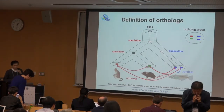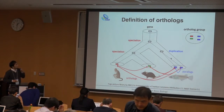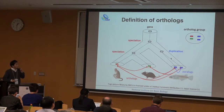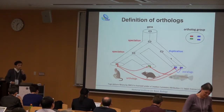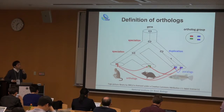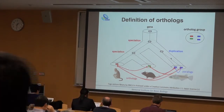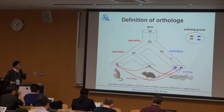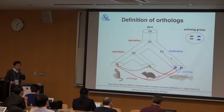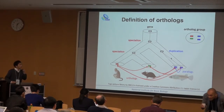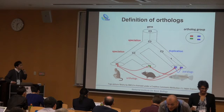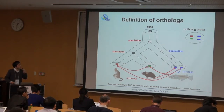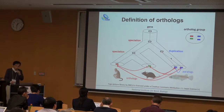First, I will mention the definition of orthologs. Originally, orthologs are defined as gene pairs diverged by speciation. So in this example of an evolutionary scenario, these pairs shown in red lines are orthologs. These gene pairs can be clustered into a set of genes, and the resulting set of genes are called ortholog groups.